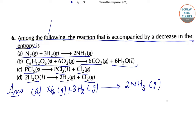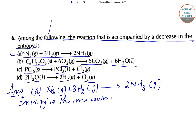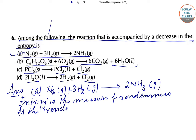Now let's understand why. Entropy is a measure of randomness. Entropy is the measure of randomness of a system.